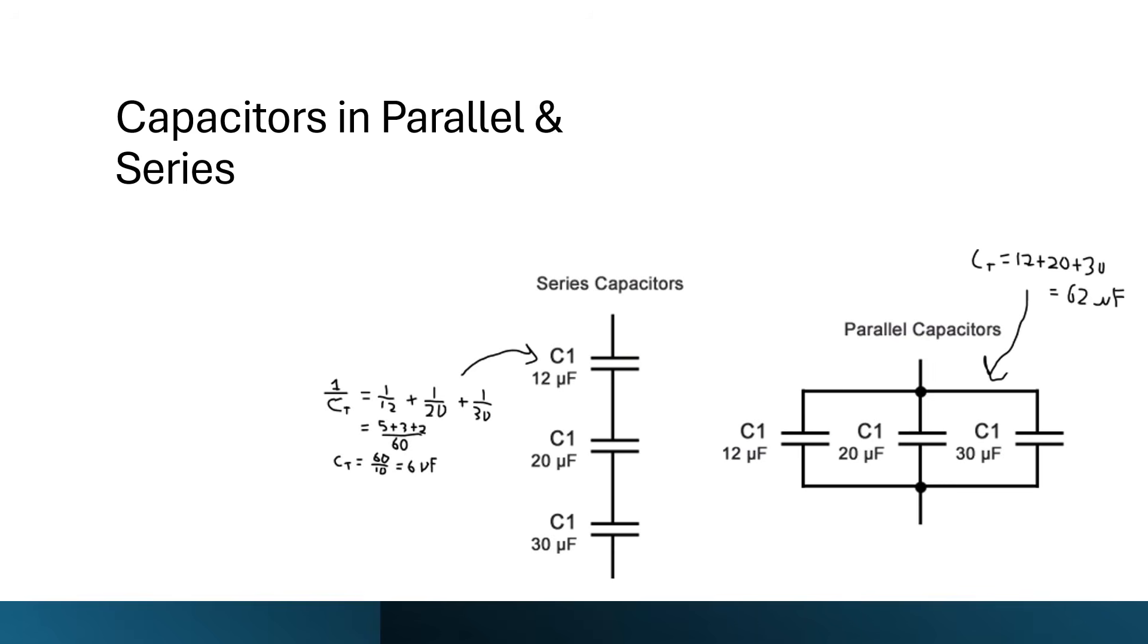Capacitors can be combined in series and in parallel as shown to the right. When attached in parallel, the total capacitance is just the sum of the individual capacitances. When combined in series, the inverse of total capacitance is the sum of all the inverses of the capacitances. The equations relating capacitors in series and parallel are the same as the ones relating spring constants, if that helps you remember them.